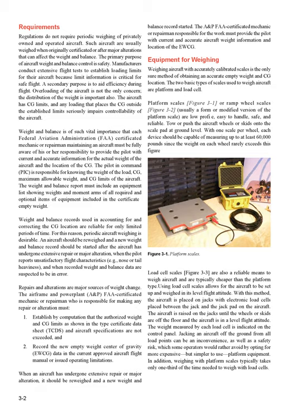Repairs and alterations are major sources of weight change. The A&P FAA-certificated mechanic or repairman responsible for making any repair or alteration must: (1) establish by computation that the authorized weight and CG limits as shown in the type certificate data sheet (TCDS) and aircraft specifications are not exceeded, and (2) record the new empty weight center of gravity (EWCG) data in the current approved aircraft flight manual or issued operating limitations. When an aircraft has undergone extensive repair or major alteration, it should be re-weighed and a new weight and balance record started. The mechanic or repairman must provide the pilot with current and accurate aircraft weight information and the location of the EWCG.